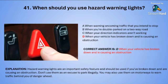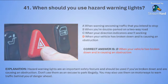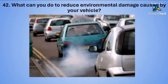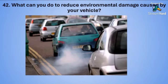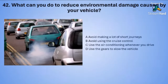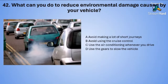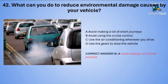Question forty-two: What can you do to reduce environmental damage caused by your vehicle? A: avoid making a lot of short journeys. B: avoid using the cruise control. C: use the air conditioning whenever you drive. Or D: use the gears to slow the vehicle. The correct answer is A — avoid making a lot of short journeys.